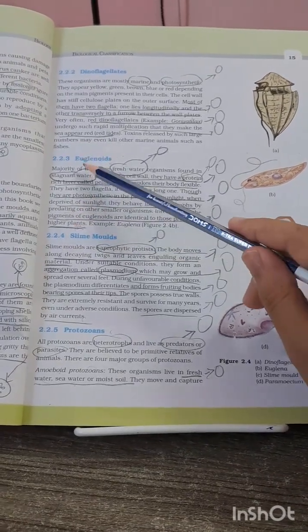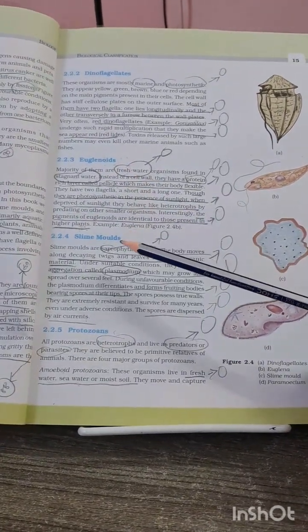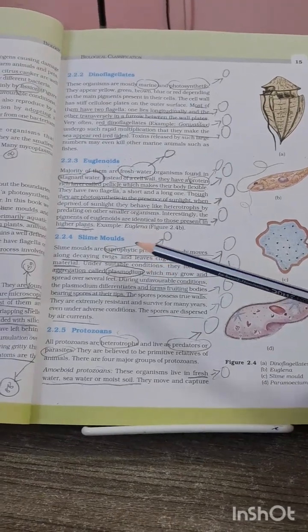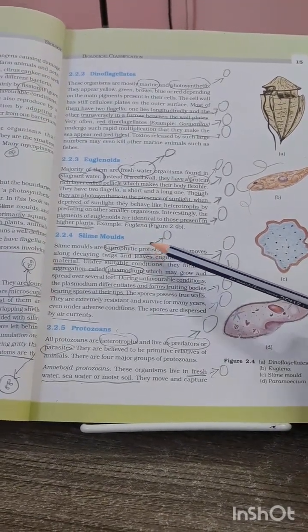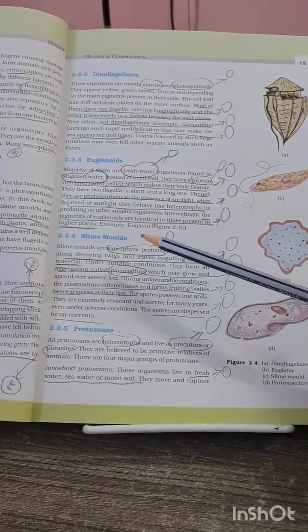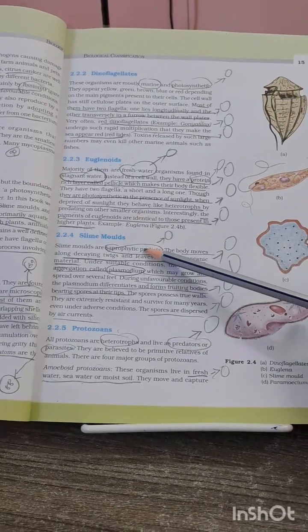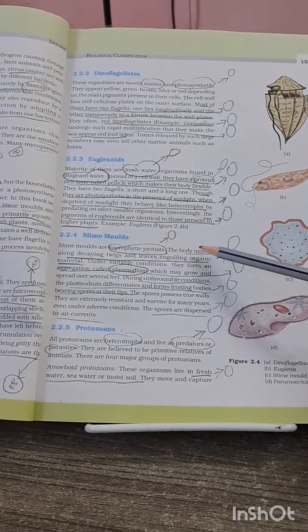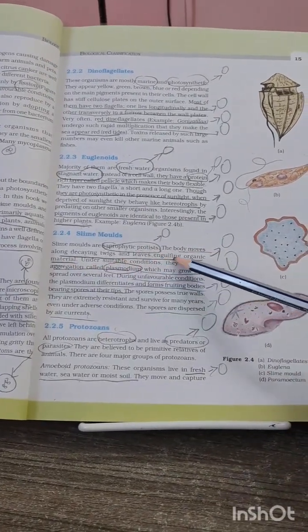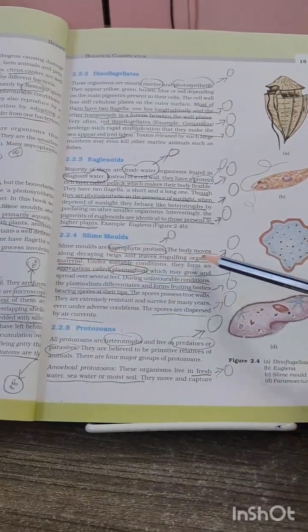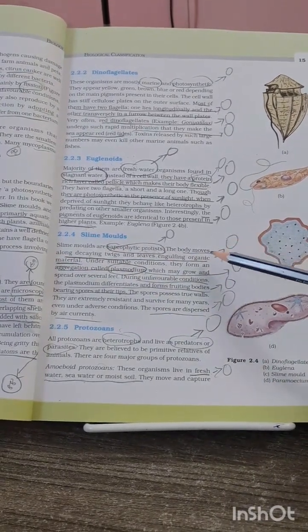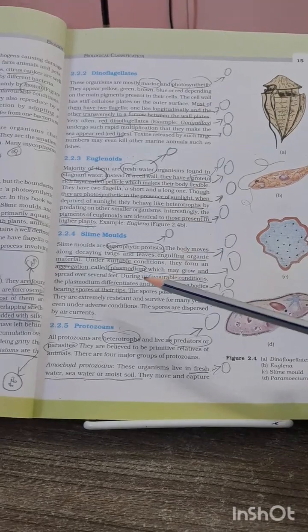Now coming to the slime molds, they are the saprophytic protists. Do not get confused that saprophytic protists are only slime molds. It has been mentioned in the NCERT and asked many times. The body moves along decaying twigs and leaves, engulfing organic material. This line also considered an MCQ about their movement.